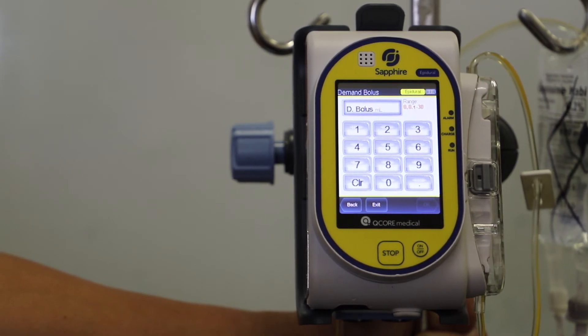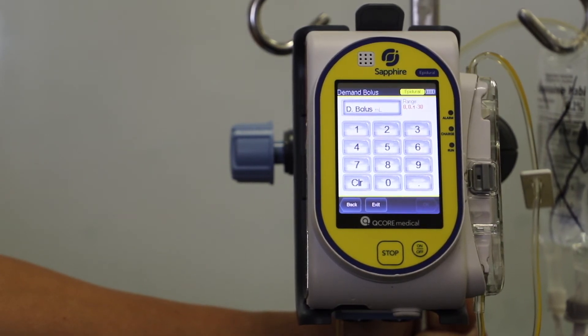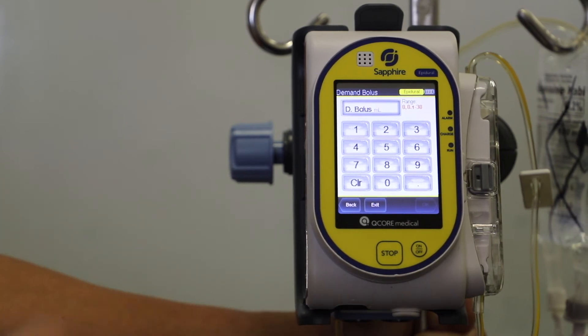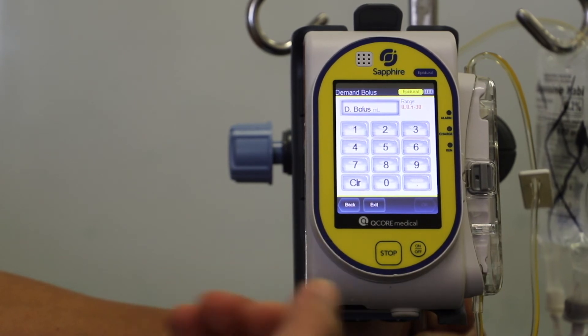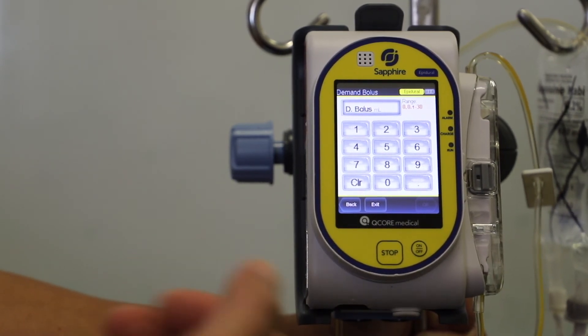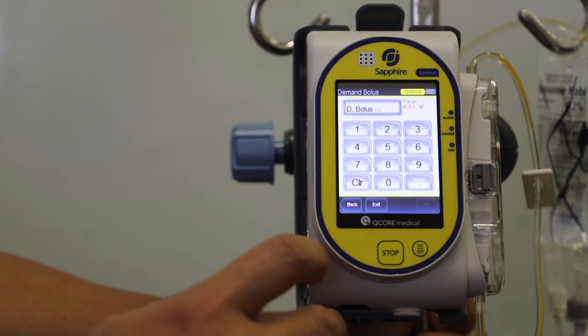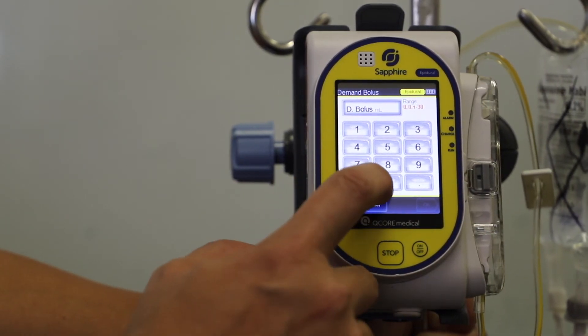D bolus stands for demand bolus. So if it's continual rate, there's no demand. The demand bolus refers to as if it was a PCEA, where it has a handset where a patient could press. So we select zero.